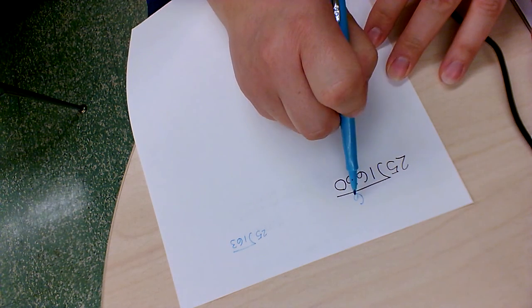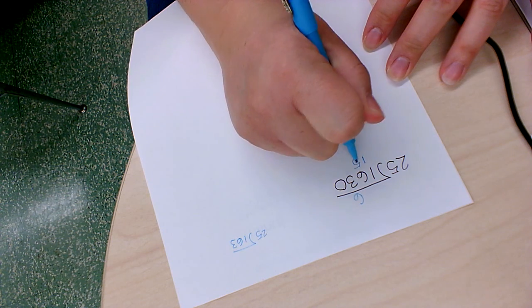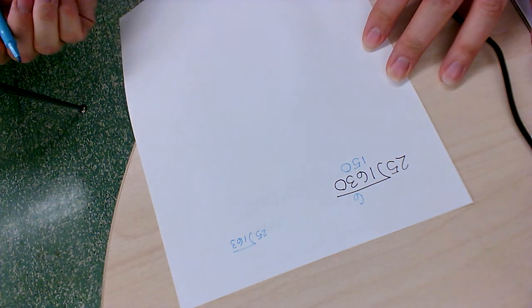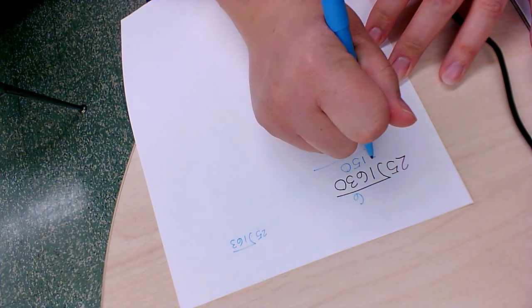And so six times 25 is 150. If I had quarters, I have $1.50. Now we get to subtract.